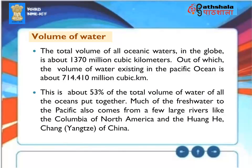Volume of Water: The total volume of all oceanic waters on the globe is about 1,370 million cubic kilometers. Of this, the volume of water in the Pacific Ocean is about 714.41 million cubic kilometers — about 53% of the total volume of water of all the oceans combined. Much of the fresh water entering the Pacific comes from large rivers like the Columbia of North America and the Huanghe, Chang, and Yangtze of China.